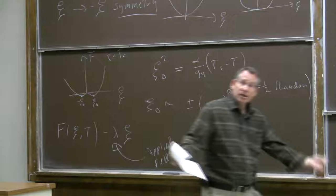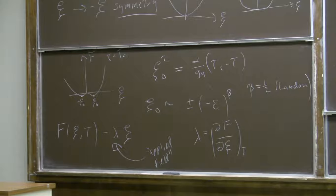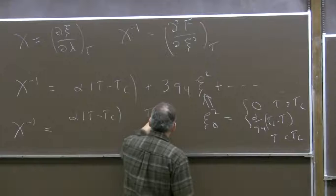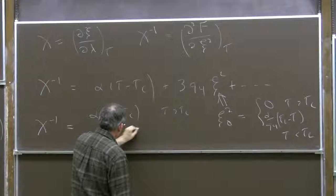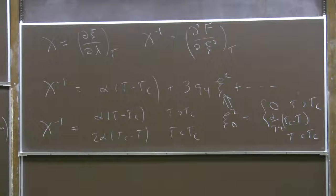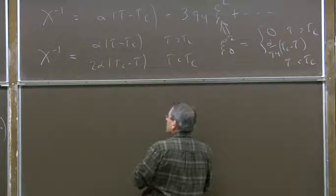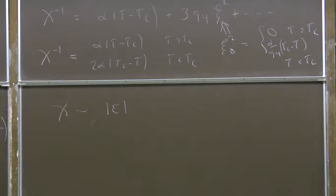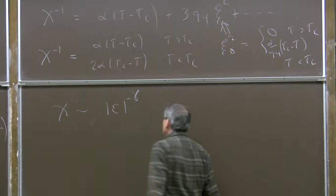Landau theory tells us the inverse susceptibility near the critical point vanishes linearly in the deviation from T_c when we're in the high-temperature phase, but goes like 2 alpha (tau_c minus tau) when approaching from below. Either way, the susceptibility itself diverges at the critical point. Landau theory says the susceptibility goes like the absolute value of epsilon to the power minus gamma, and Landau says gamma equals 1.